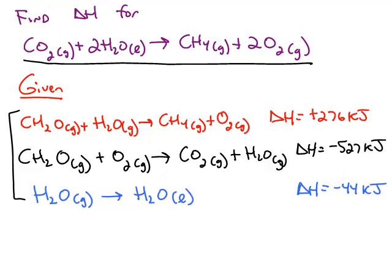So to find delta H for the overall reaction, what we have to do is modify the steps so that when we add the steps together, it gives us the overall reaction we're looking for.